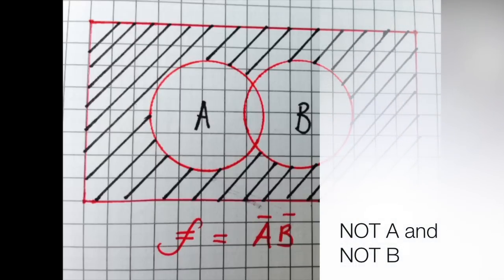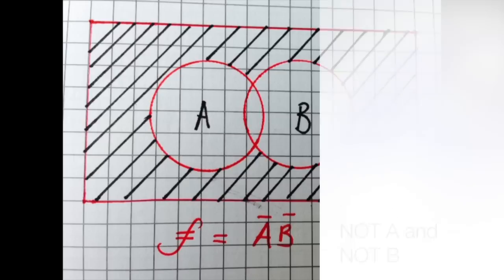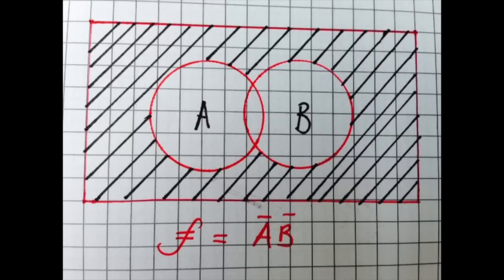For F equals NOT A and NOT B, you will see that all of the circles are empty, and it's the outside, the universe of the rectangle, that is shaded in diagonal lines.